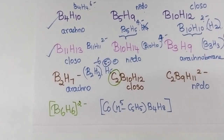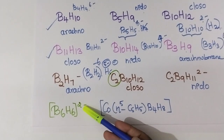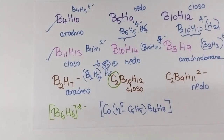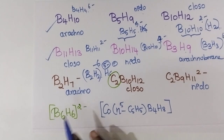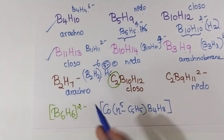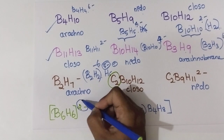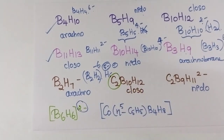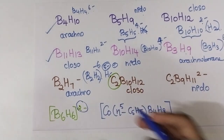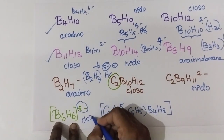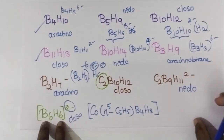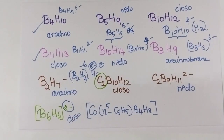Now this next example is already in BnHn format — no need to do anything. Just look at the charge: it is 2 minus. 2 minus means it is closo borane.